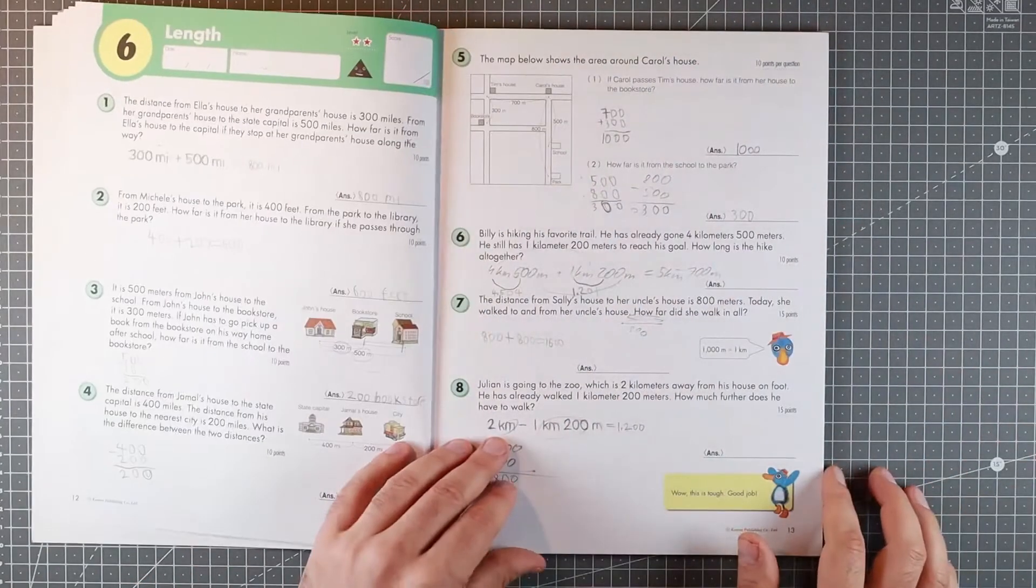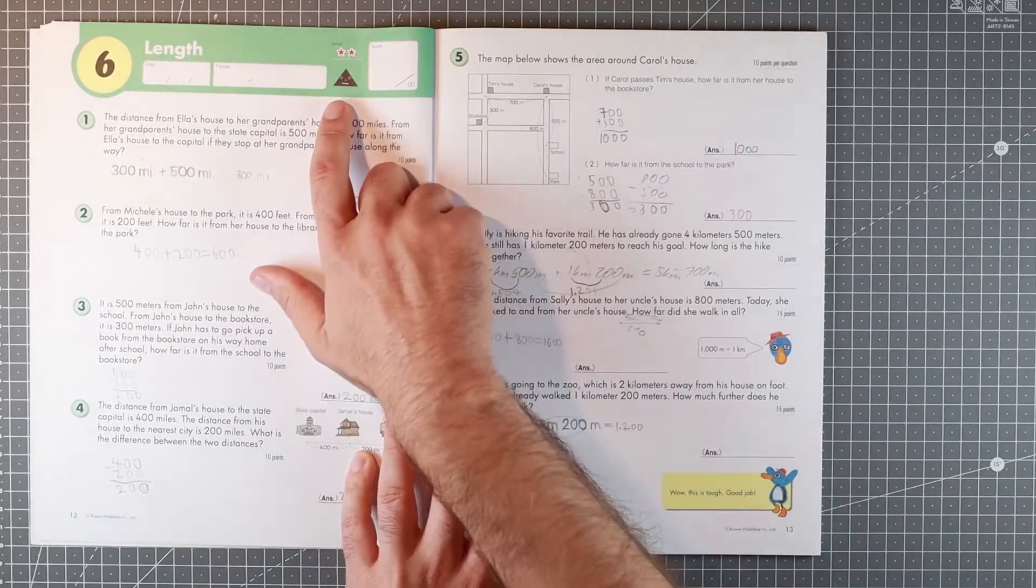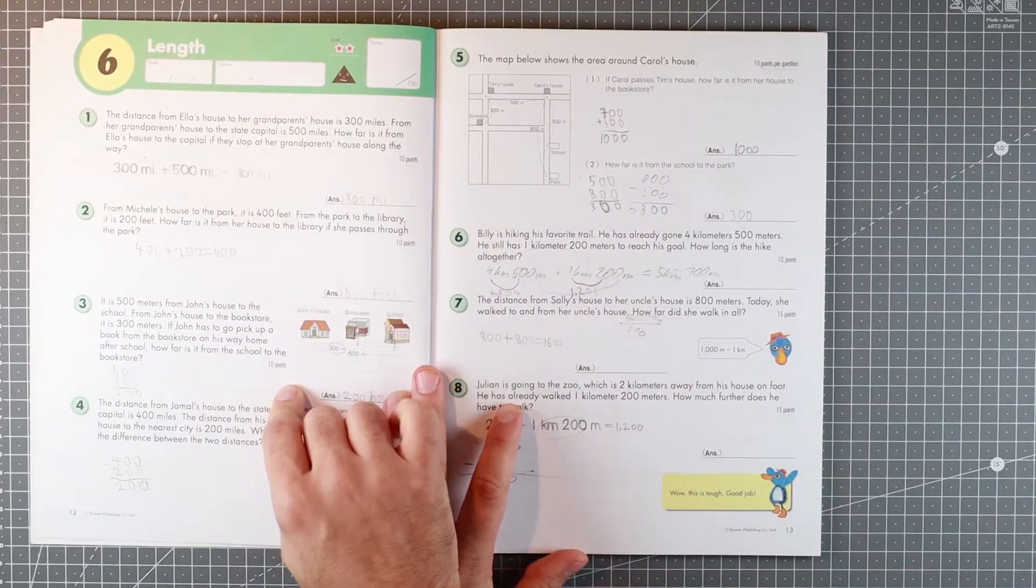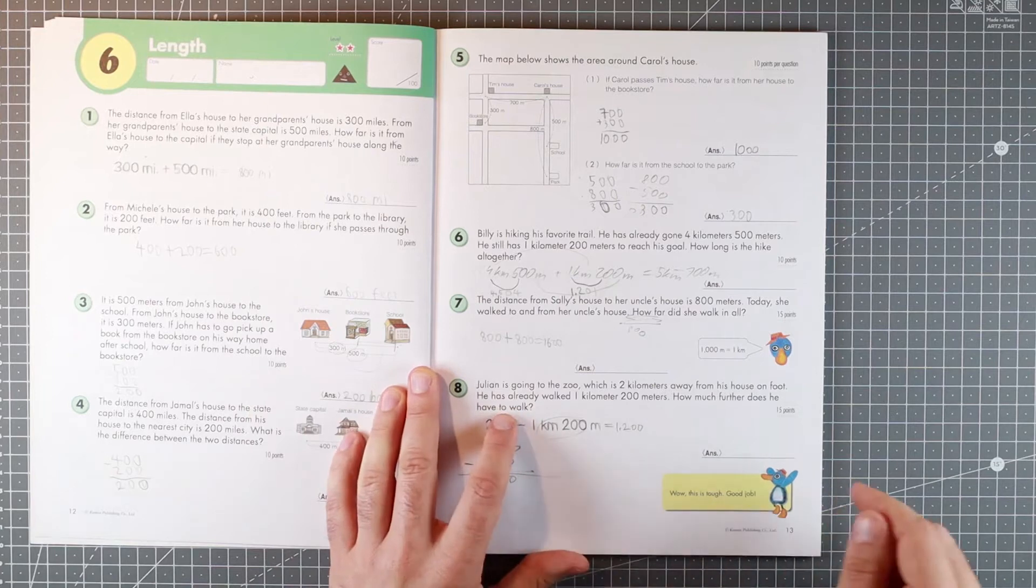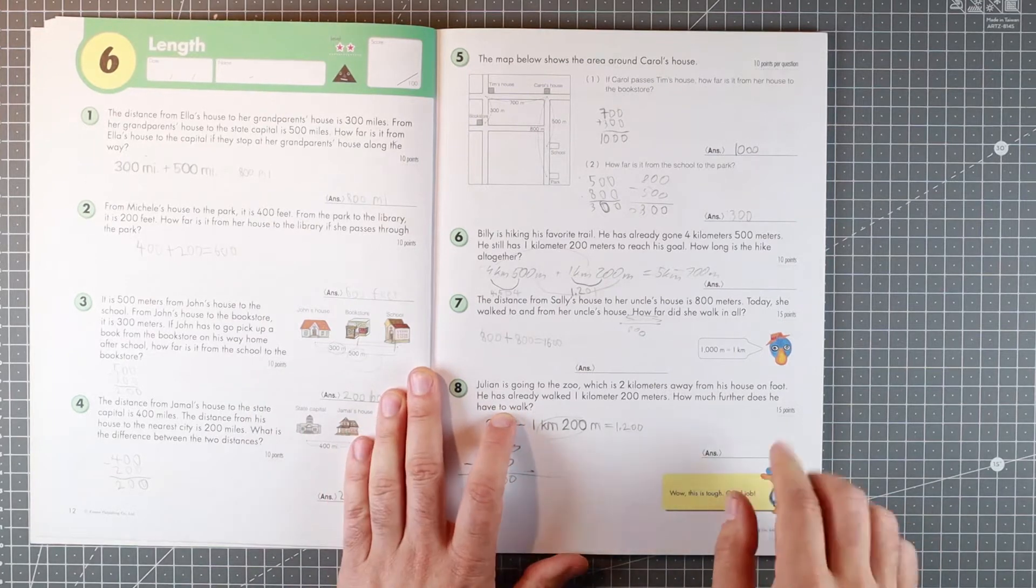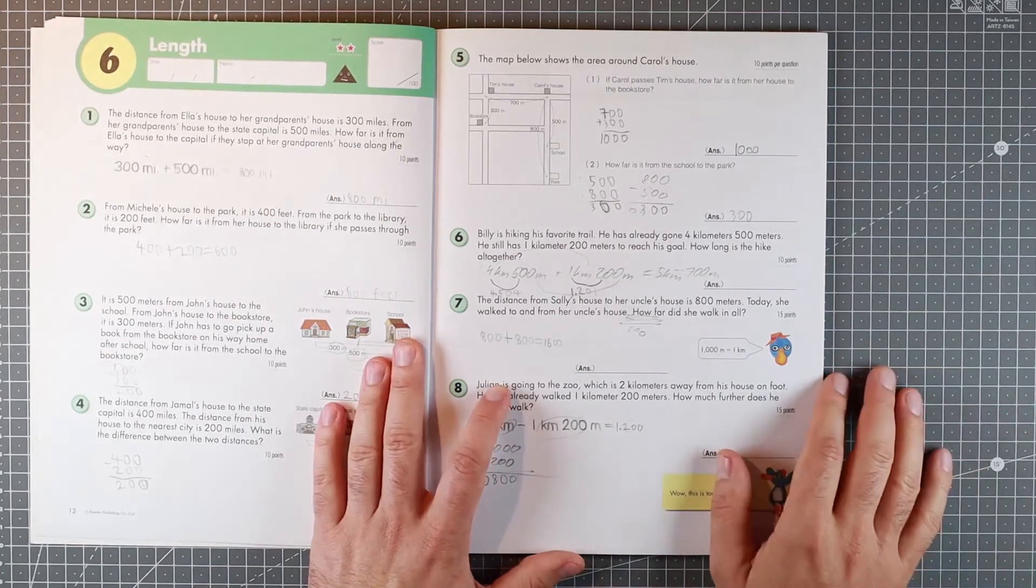Length, obviously US edition combines miles. It does have kilometers here as well. Kids should know both, so no problems there.